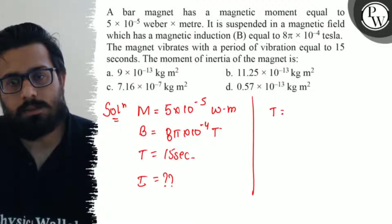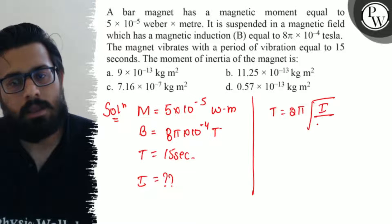Now we know the relation that T is equal to 2π times the square root of I upon MB.